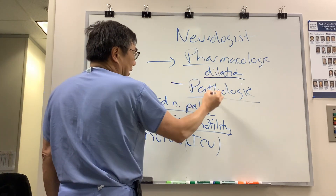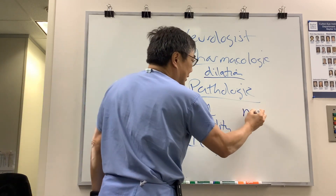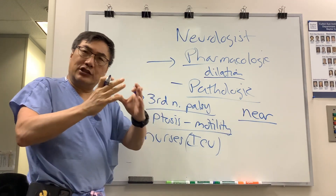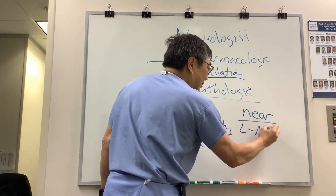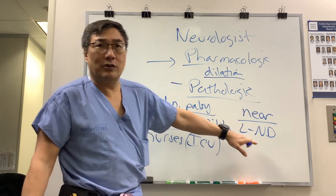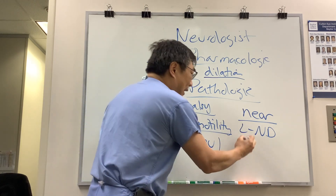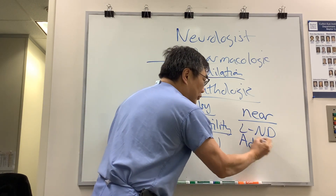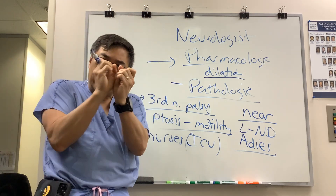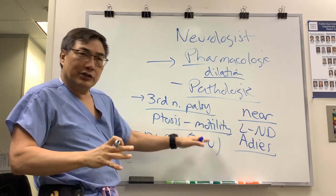Once you've established whether or not there's a contact source, the way to differentiate pharmacologic dilation from other non-third-nerve-palsy pathologic pupils is to test the near reaction. If the near reaction is good but the light reaction is poor, that's called light-near dissociation. Pharmacologic dilation won't respond to either light or near, but in neurogenic forms — if it's just one eye with no third nerve palsy — the most common is Adie's tonic pupil.